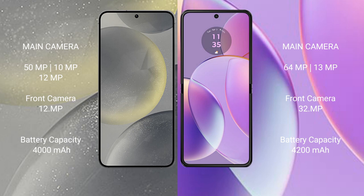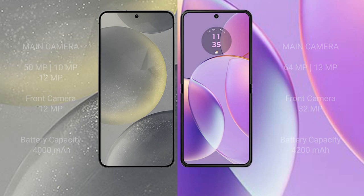Samsung Galaxy S24 has a 4000mAh battery with 25W fast setting support. Motorola RAZR 40 has a 4200mAh battery with 30W fast setting support.